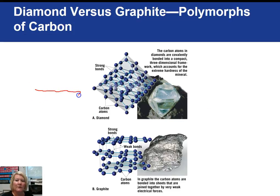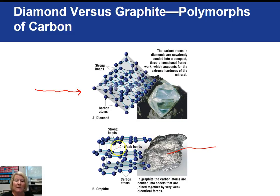Looking at the carbon atoms in diamond, they are all strongly bonded with covalent bonds in an octahedron form. Whereas graphite — which is the lead in your pencil — has carbon atoms arranged in sheets. Within the individual sheets the bonds are strong, but between the sheets the bonds are very weak. And the weaker the bond, the softer the substance. We all know that the lead in our pencils is easy to break.